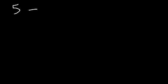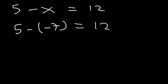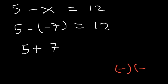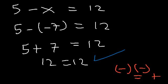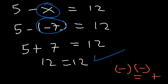And we can check it. To see if you have the correct answer, plug it back in. If we replace x with negative 7, we can see that 5 minus negative 7 is the same as 5 plus 7. Whenever you have two negative signs next to each other, it changes and becomes a positive sign. 5 plus 7 is 12, and 12 equals 12. So the equation is true, which means that x is indeed negative 7.